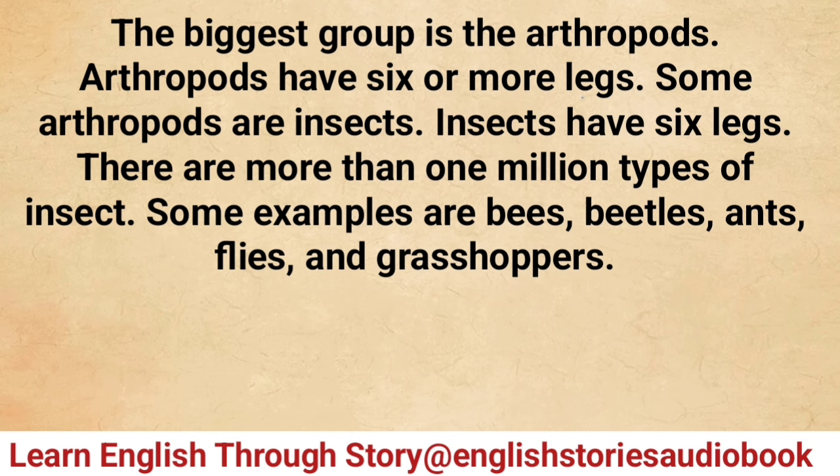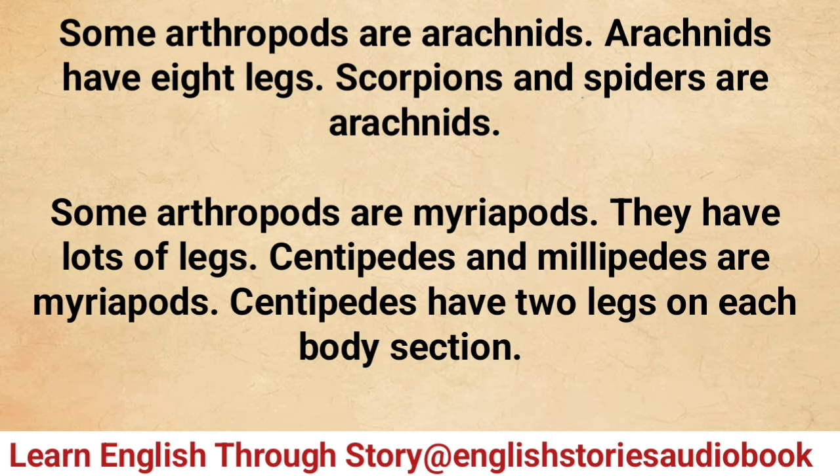Some arthropods are insects. Insects have six legs and there are more than one million types of insect. Some examples are bees, beetles, ants, flies, and grasshoppers. Some arthropods are arachnids — arachnids have eight legs. Scorpions and spiders are arachnids.